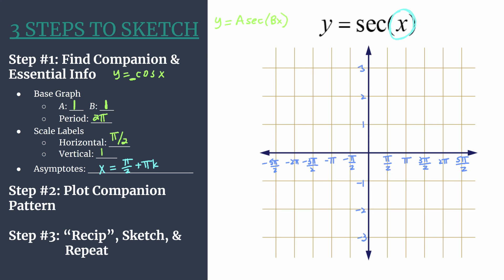All right, so now that we've gathered and organized all our information, we're ready to move on to step two, where we will plot our companion pattern. So we're going to plot the cosine pattern that came from up here.